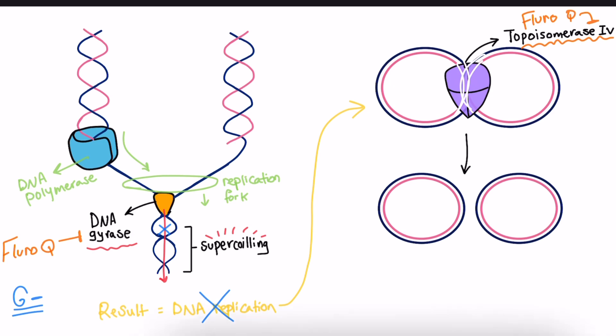While in gram-positive, such as Mycobacterium tuberculosis, fluoroquinolones primarily inhibit the DNA topoisomerase IV complex, leading to disruption of separating the two interlinked DNA molecules, which in turn results in bacterium damage.